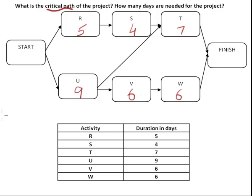Let's write it down. So the first path is start, R, S, T, finish. Second path is start, U, T and finish. Third path is start, U, V, W and finish.